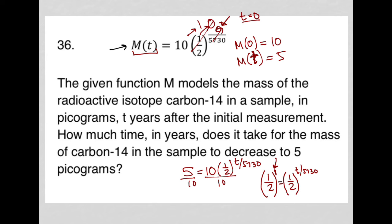So somehow we want one half to the first power to equal one half to the t over 5730 power. The only way that happens is if the exponents actually equal each other, and you have one is equal to t over 5730. That's the only way that this statement ends up being true.